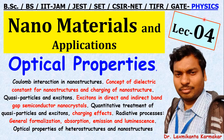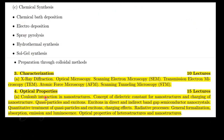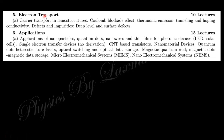Hello, welcome everyone. This is lecture number four on nanomaterials and applications. Today I want to discuss optical properties, including Coulomb interaction in nanostructures, the concept of dielectric constant for nanostructures, charging of the structure, quasi-particles and excitons, direct and indirect band gaps, and optical properties such as absorption, emission, and luminescence. You can see the syllabus — parts one, two, and three were already discussed in previous lectures. Today we will cover optical properties, and later we will cover electron transport and applications.